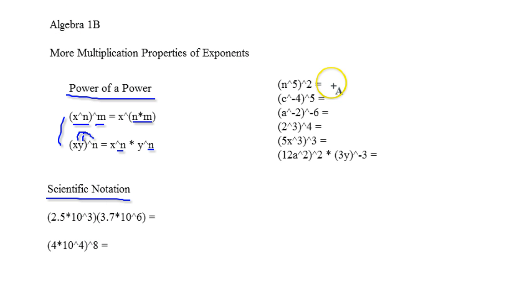So n to the fifth to the second power just becomes n to the tenth because we can multiply the five and the two.